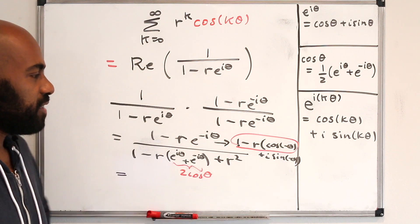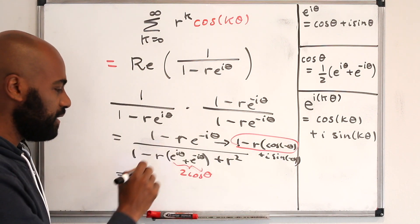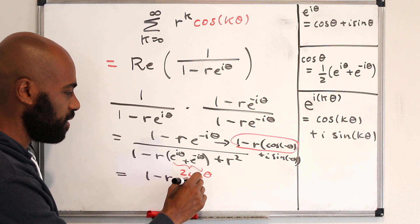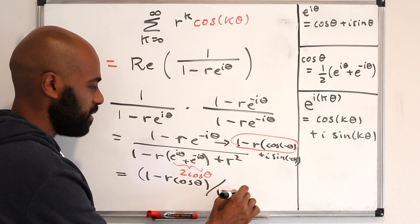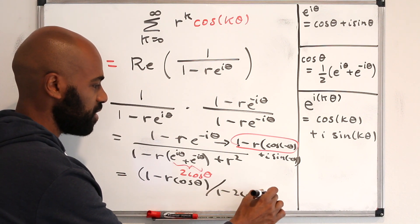Now, since cosine of negative theta is cosine of theta, that leaves us with a numerator of 1 minus r cosine theta, and a denominator of what we had before, 1 minus 2r cos theta plus r squared.